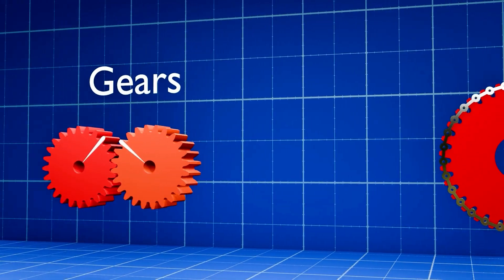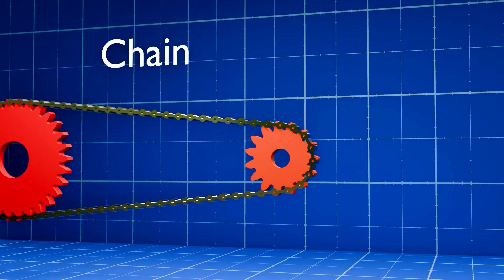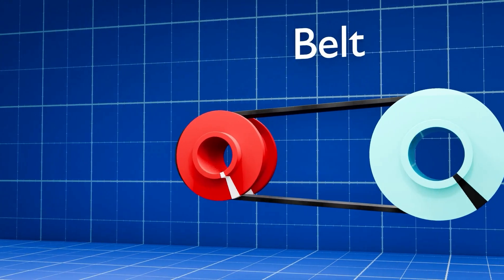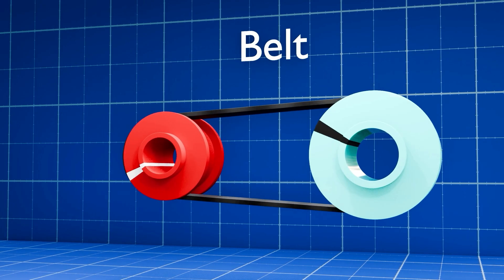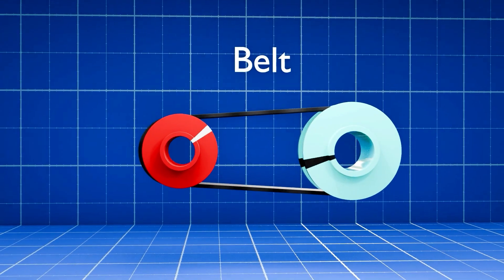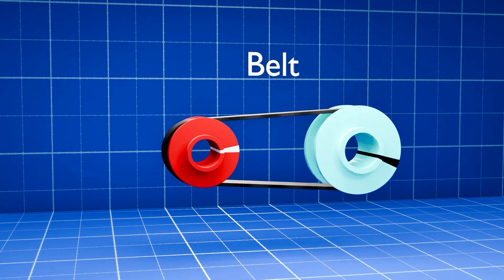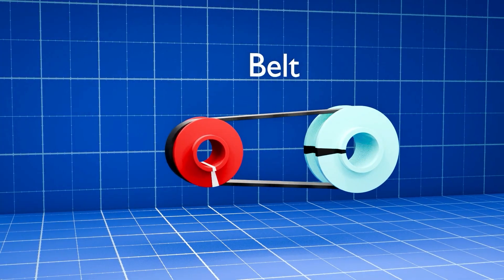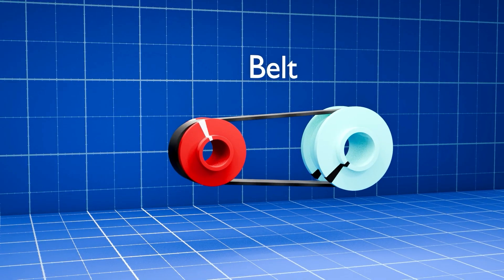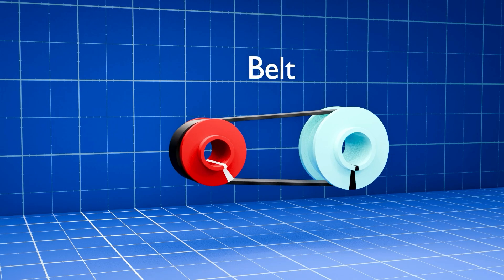In machines, power must be transmitted from the motor to various parts, and this can be done through belts, chains, or gears. Belts use friction between a belt and a pulley to transmit power between shafts. They are ideal for situations where shafts are spaced further apart and offer a nice balance between cost and efficiency. But there's a slight downside: belts can occasionally slip off the pulley.